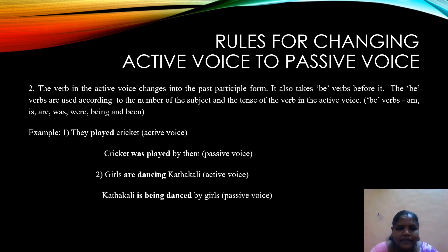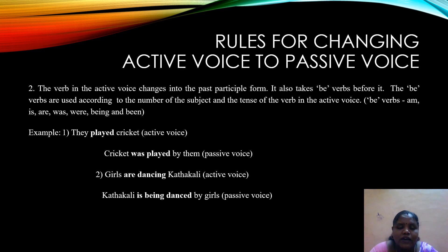The second rule is that the verb in the active voice changes into the past participle form. In all tenses we are going to use the third form of the verb, also called the past participle form. To indicate the tense, we use B verbs — am, is, are, was, were, being, and been — to tell us which tense the sentence is in. For example, in 'They played cricket,' cricket becomes the subject, 'was' denotes past tense, and the past participle 'played' is used. In present continuous tense, 'is being' plus past participle is used.